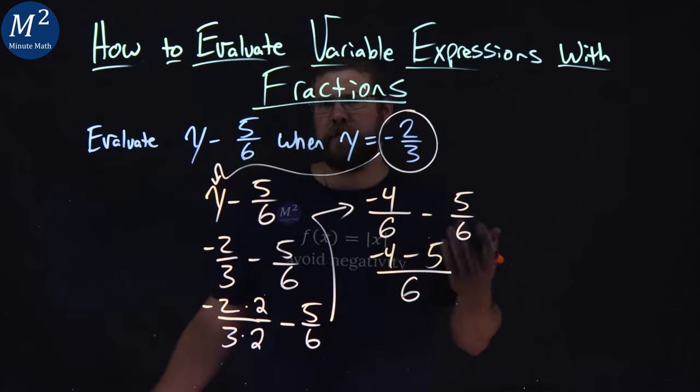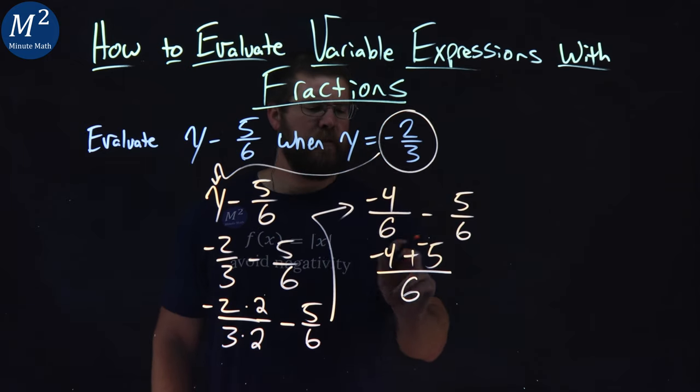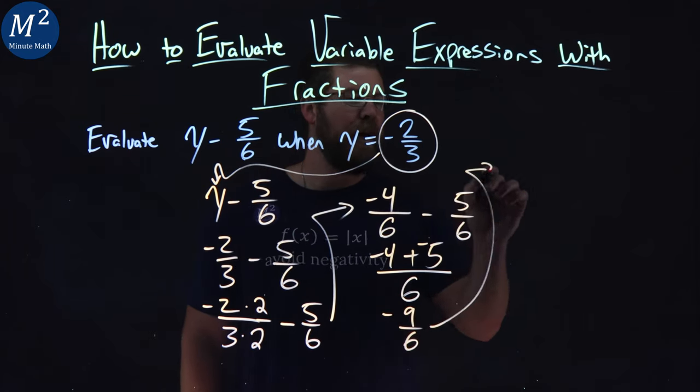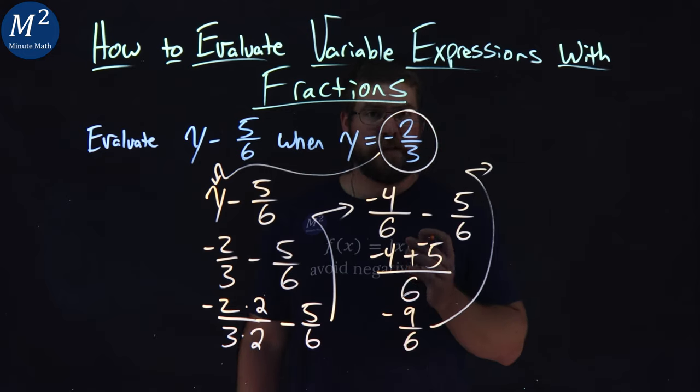Negative 4 minus 5 is like plus negative 5. So negative 4 plus negative 5 is negative 9. Negative 9 over 6. Now lastly, negative 9 over 6 can be simplified.